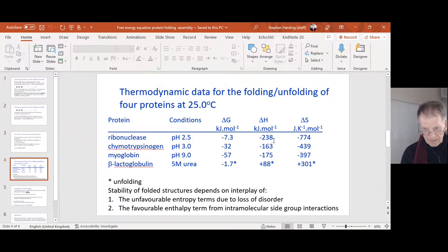With beta-lactoglobulin in five molar urea, which is a solvent which disrupts hydrogen bonds in the molecule, so the loss of bonds means that delta H is positive. That's compensated by an increase in disorder of the system so that delta G is minus 1.7, is negative, so unfolding will take place.